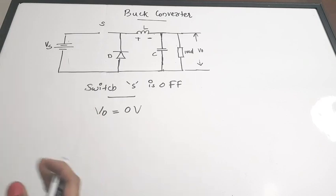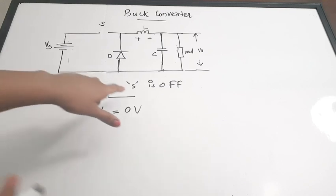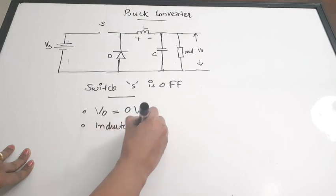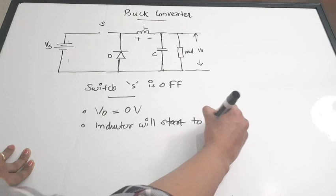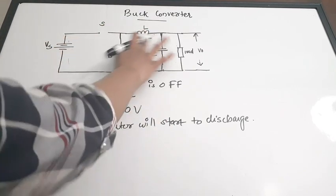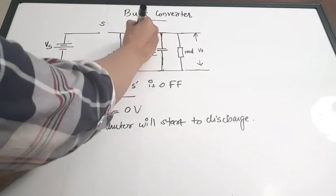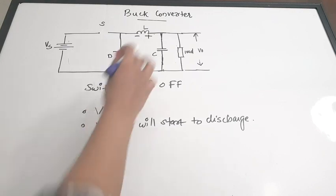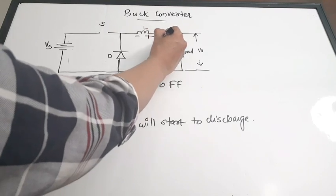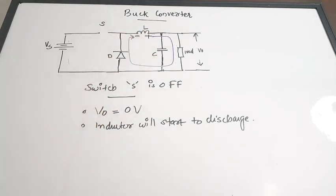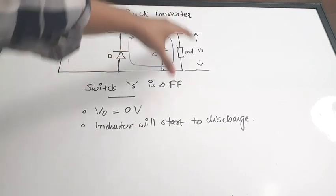However, the inductor had charged to its full extent when the switch was on. Now when the switch is off, the inductor will start to discharge. The polarity of the inductor is now reversed — earlier it was positive-negative, now it becomes negative-positive. The current flows in the output loop from the positive terminal of the inductor to the negative terminal. Since there is an open path at the switch, current flows only in this output loop.